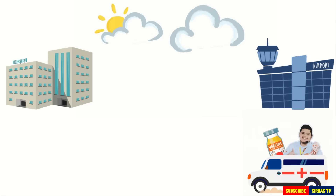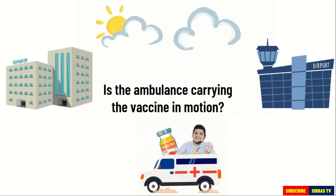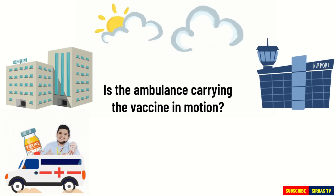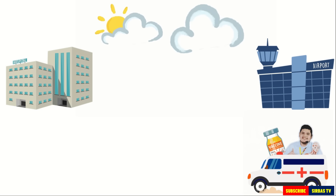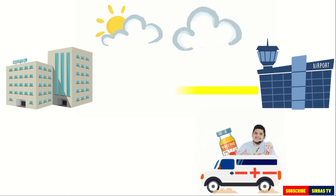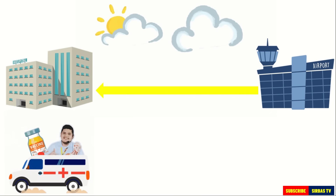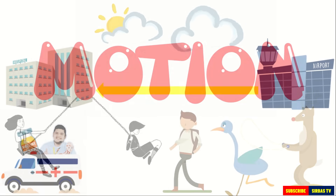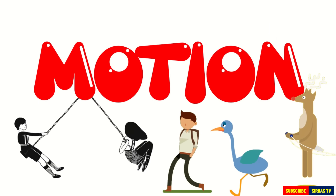Take a look at this example. Is the ambulance carrying the vaccine in motion? The ambulance is in motion. But what is your basis in saying that the car is in motion? The car is in motion because its position is changing. It moved from the airport to the hospital. When an object changes position during a period of time, the object is said to be in motion.